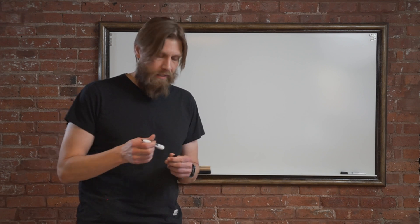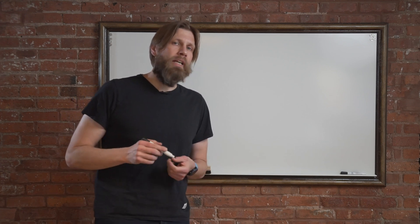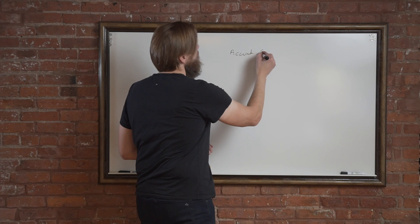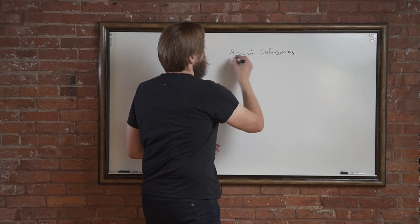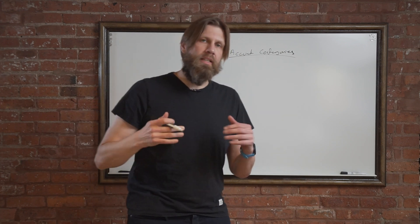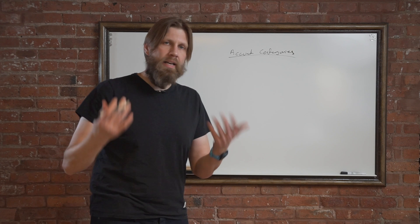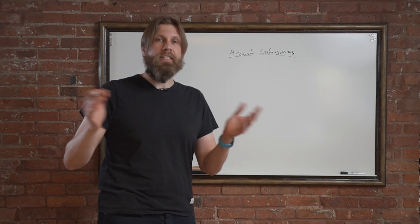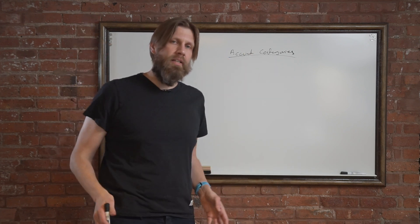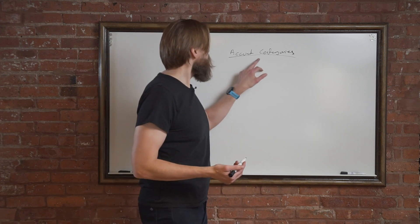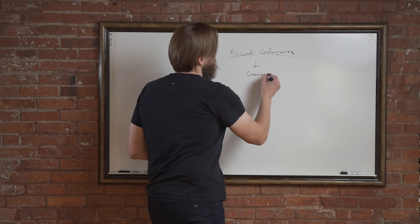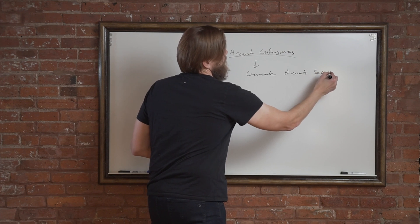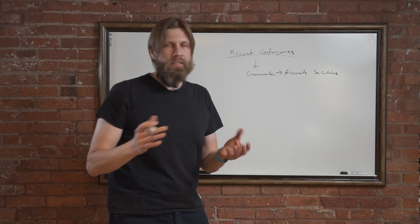One thing that just came recently in is the auto generation of account schedules. So we have account categories, which I think I covered in one of the videos. Basically you can categorize your GL accounts by like asset, liability, and within assets it could be cash and fixed assets and stuff like that — so it creates these blocks of categories. And from the account categories you can actually generate account schedules. Those are automatically generated and they are actually in the system.